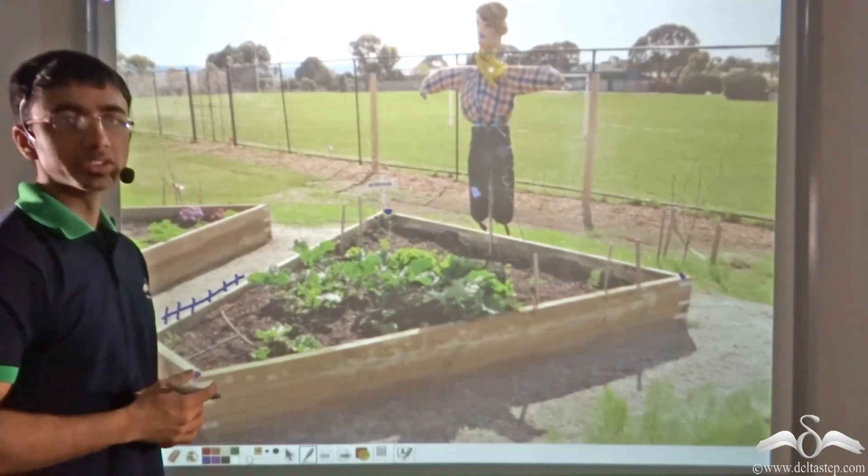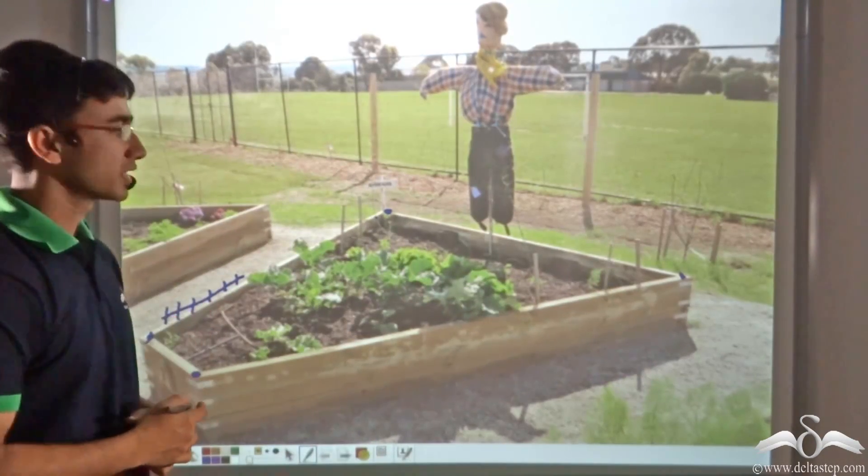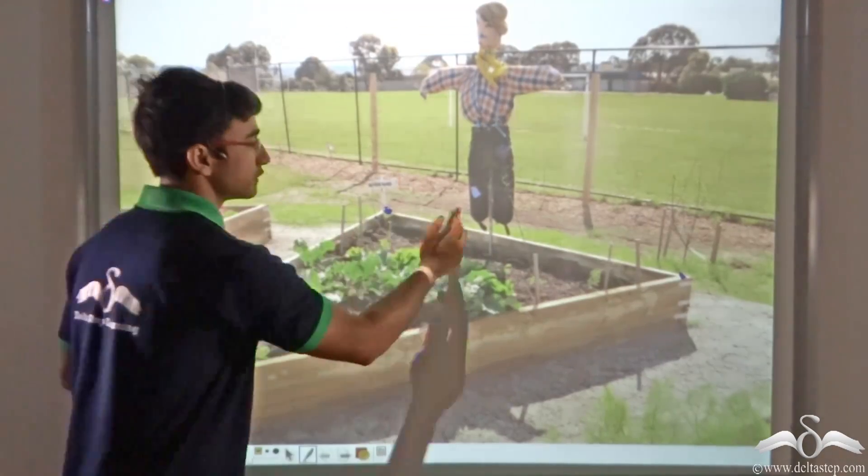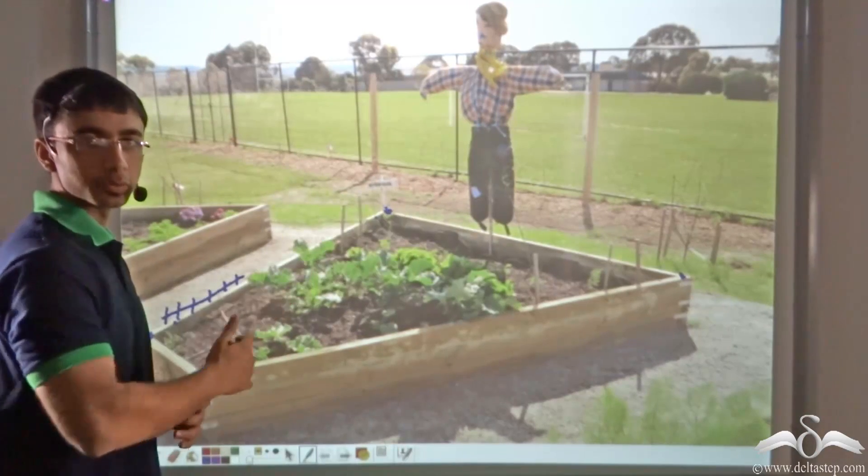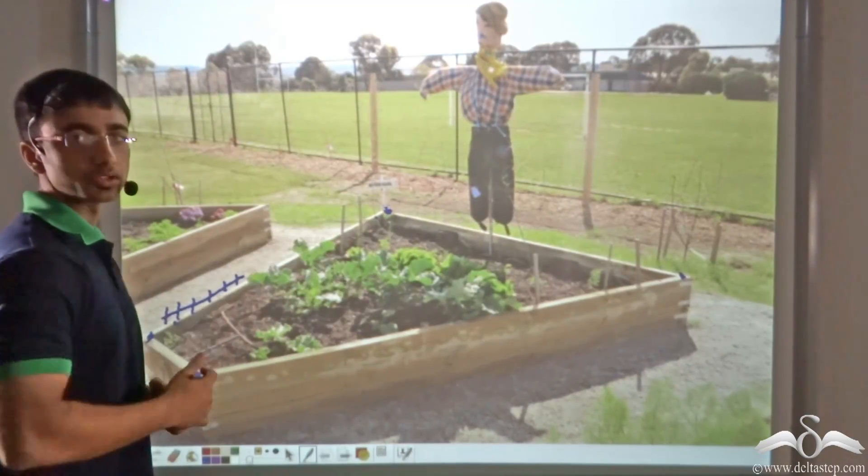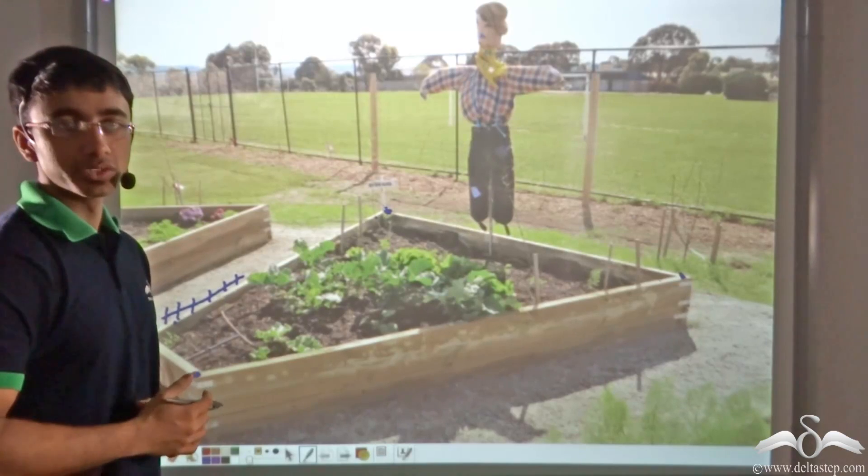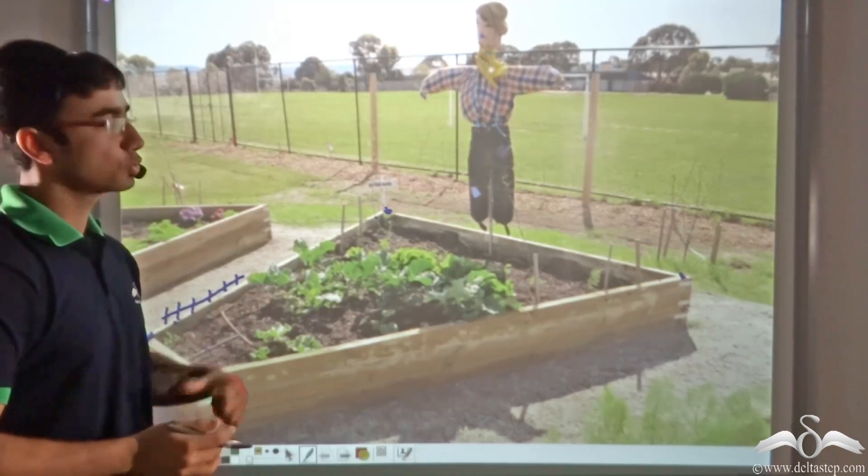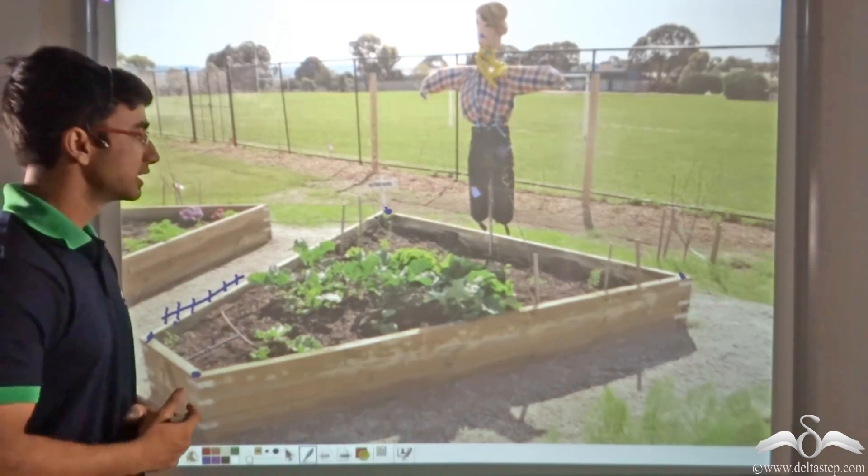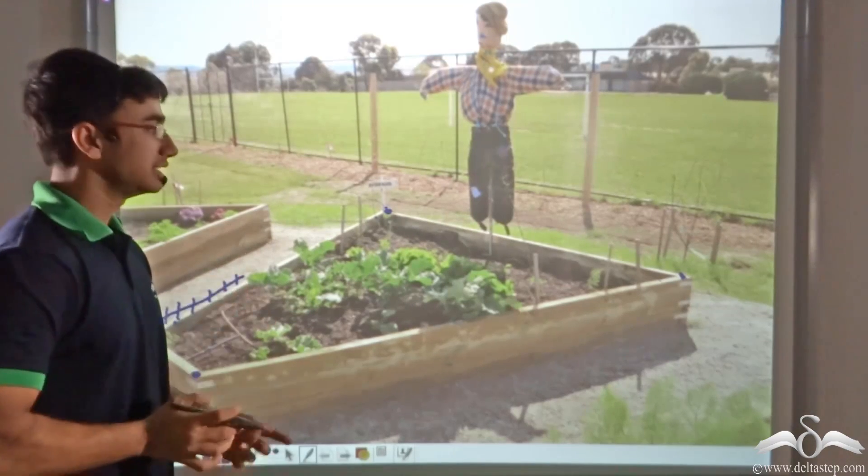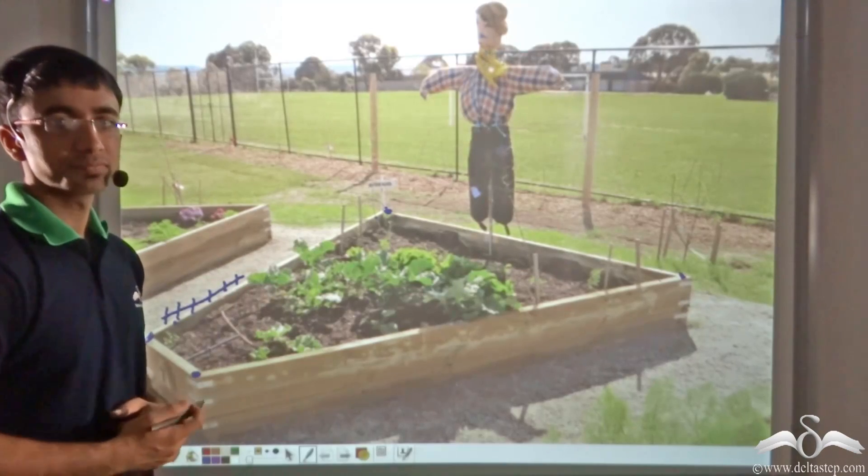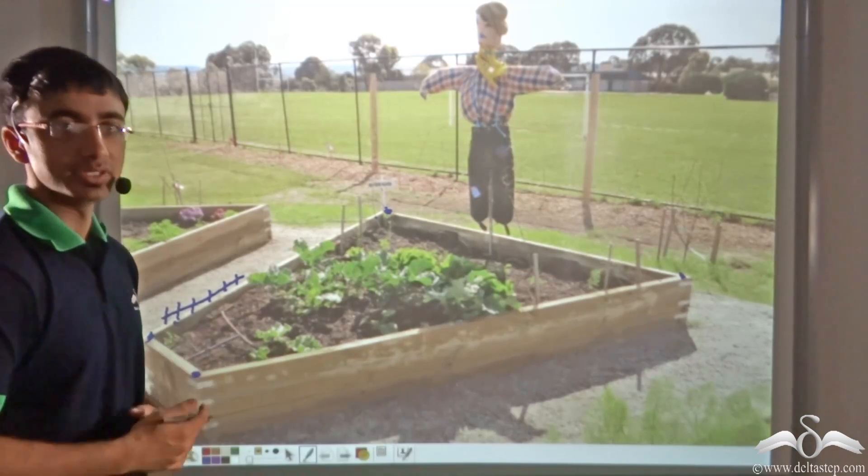In order to do this, he needed to know two things: what the length of the fence would be that he requires, and what would be the area of the net that he requires to cover the plot of land. So to help Suresh, we need to find out the perimeter of the quadrilateral and the area of the quadrilateral. Let us see how we proceed with this.